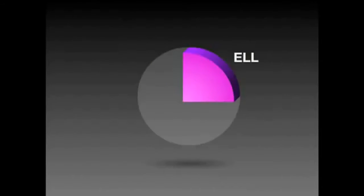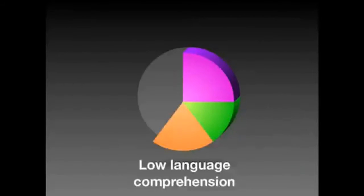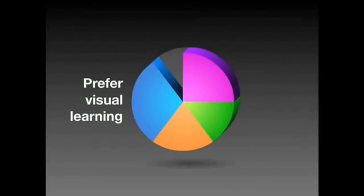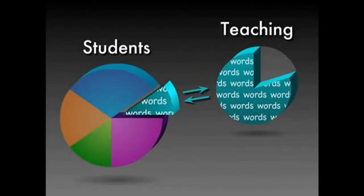But let's look at who we're trying to teach. Focusing on California, 25% of students are English language learners. Another 15% have language-based learning difficulties such as dyslexia. An additional 20% fail language comprehension tests. And a large portion of the remaining students characterize themselves as visual learners. Leftover, there's only a tiny little segment of students for whom current teaching methods are a good fit.